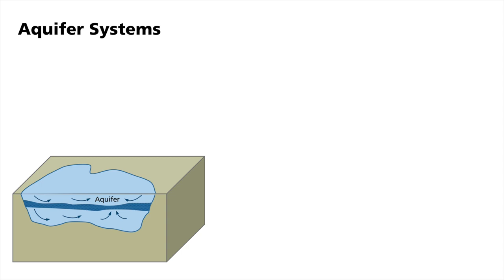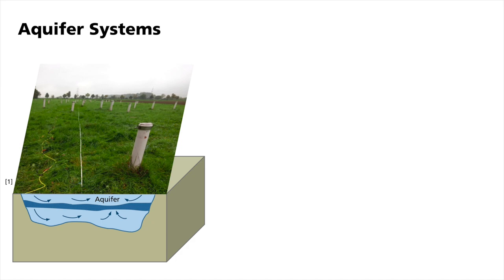The characterization of aquifer systems is an important task to improve the prediction of groundwater flow and to evaluate possible contamination hazards. To investigate different geophysical methods, a test site near Jülich in the west of Germany was set up. Here, borehole measurements reveal the complex aquifer structure.